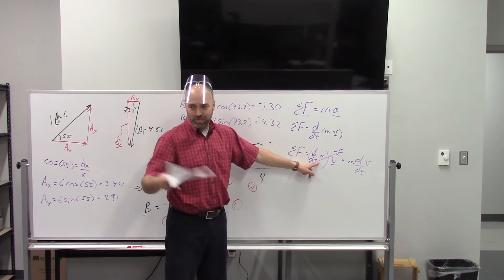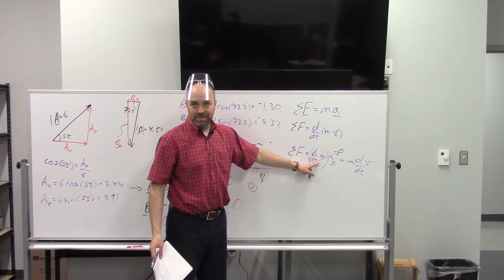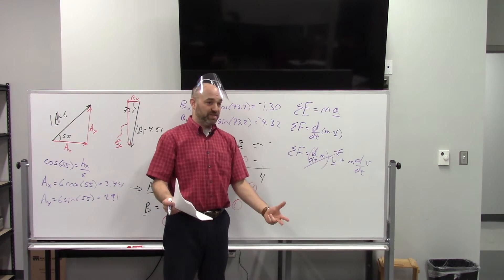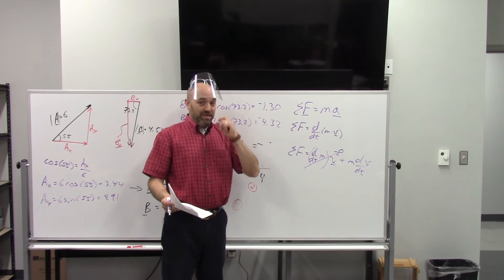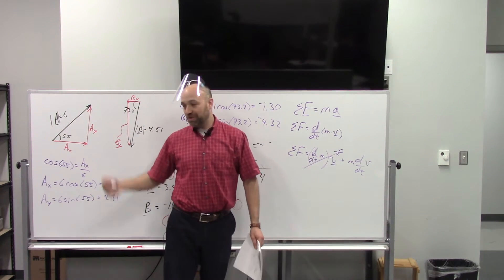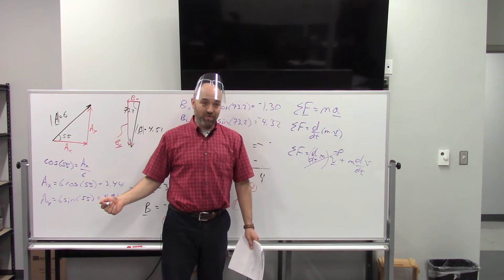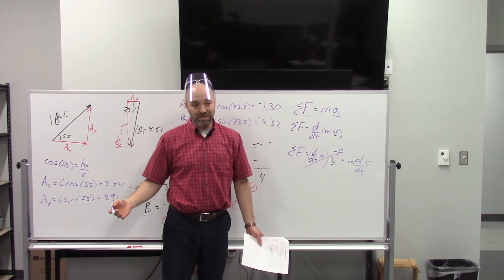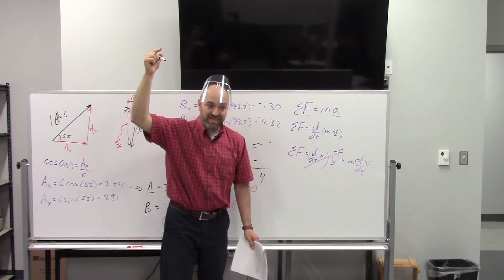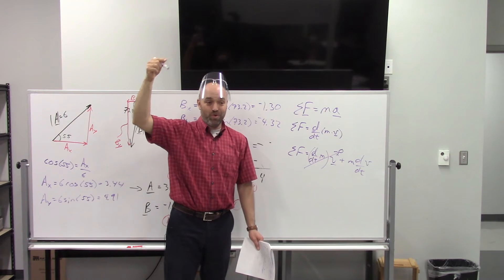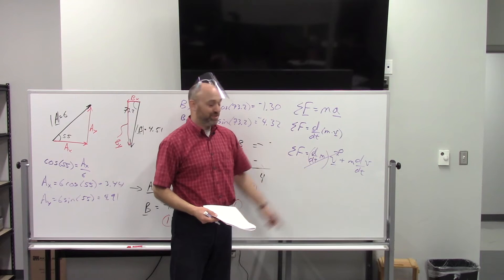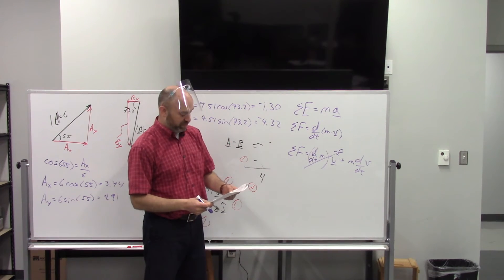When would mass change? Think about rockets — this is the prime example. The Saturn V rocket used to get to the moon burned 30 tons of fuel per second. That's an astounding quantity of mass being lost; you can't throw away the dm/dt term when you're talking about that. So the full momentum form of Newton's second law matters in those cases.